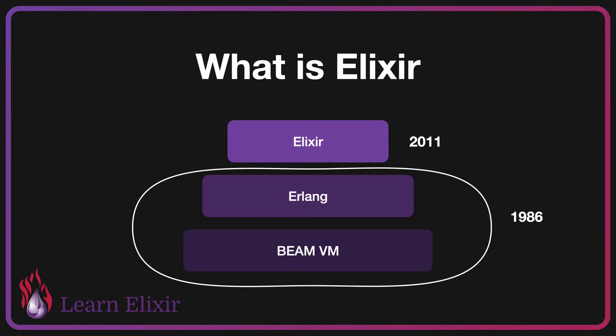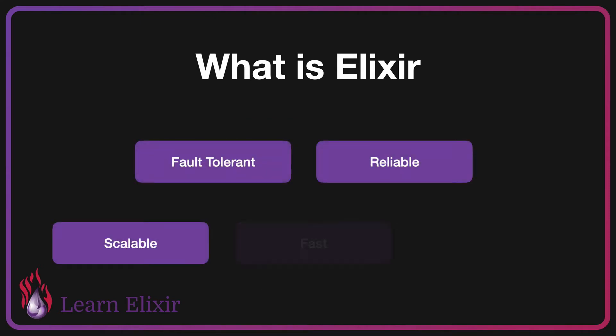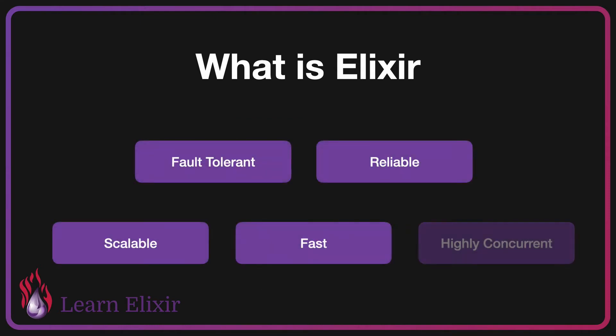Erlang has been out since 1986 and has been battle tested for over 30 years in telephone systems, which has forced it to be fault tolerant, reliable, scalable, fast, and highly concurrent. Imagine dealing with millions of phone connections — when one phone connection dies, you probably don't want all 999,000 other connections dying along with that one connection. And this is where Erlang is really strong in its fault tolerance.